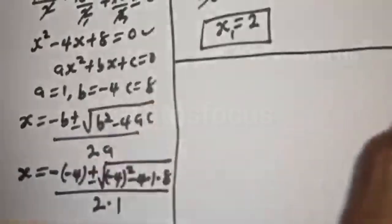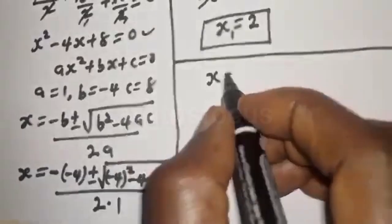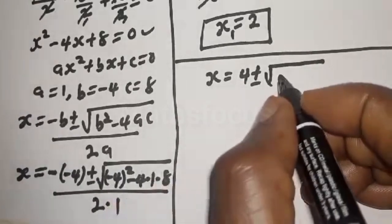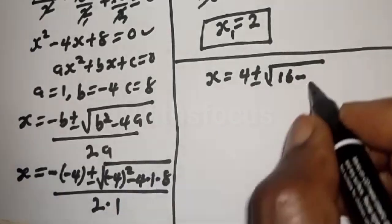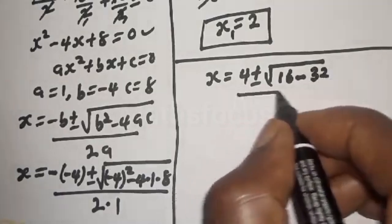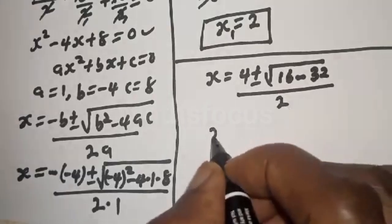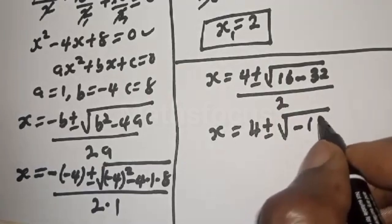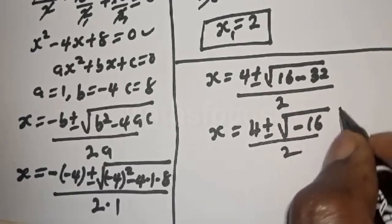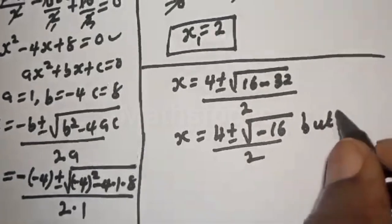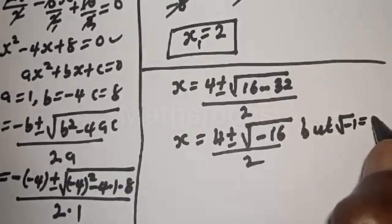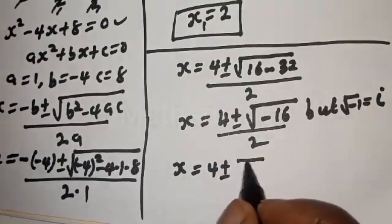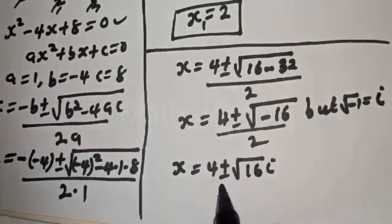Substituting: x equals minus (minus 4) plus or minus square root of (minus 4) squared minus 4 times 1 times 8, over 2 times 1. This gives x equals 4 plus or minus square root of 16 minus 32, over 2. That is 4 plus or minus square root of minus 16 over 2. Since square root of minus 1 equals i, this becomes 4 plus or minus square root of 16 times i, over 2.